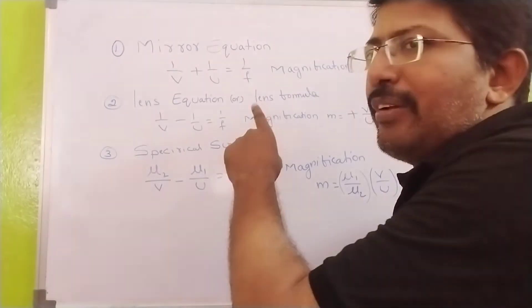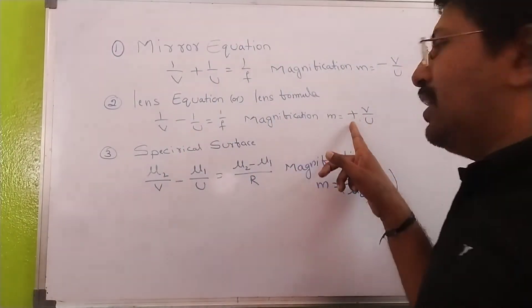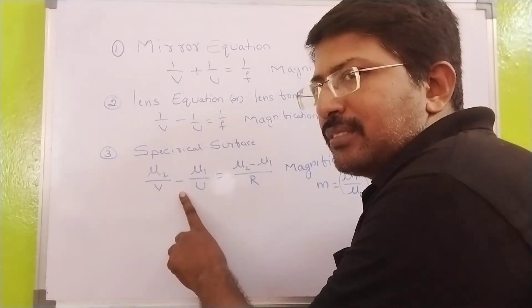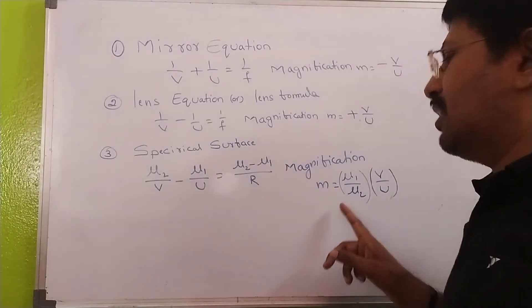In lens equation or lens formula you have minus, you will get plus here. Next spherical surface: you have minus in this formula, you have minus in magnification, plus.